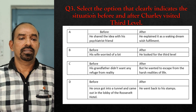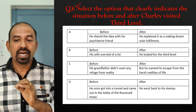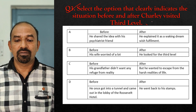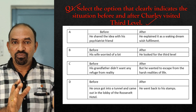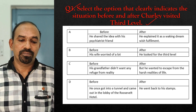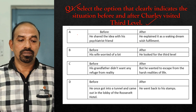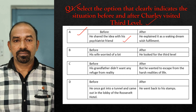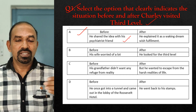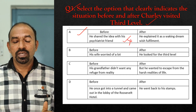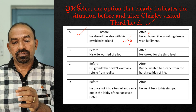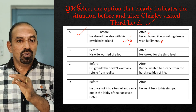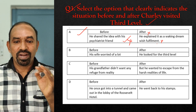Question 3: Select the option that clearly indicates the situation before and after Charlie visited the third level. Option A — Before: He shared the idea with his psychiatrist friend. This did not happen before he visited the third level. After: He explained it as a waking dream wish fulfillment. So A is not the right option.